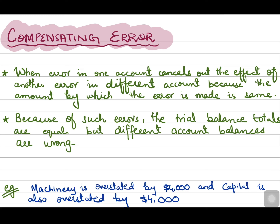Similarly, there used to be a connection between accounts in error of commission and error of principle. In error of commission, the class of account was the same but the account was wrong. In error of principle, the class of account was different but the side of the account was the same. However, in compensating errors, the accounts are not related to each other at all.